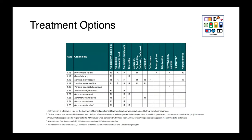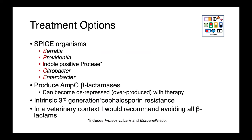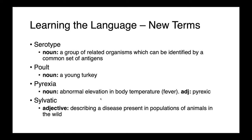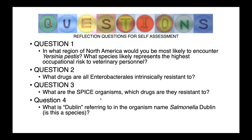The SPICE bacteria is one group worth remembering — a nice mnemonic standing for Serratia, Providencia, Indole-positive Proteae (Proteus vulgaris and Morganella), Citrobacter, and Enterobacter. These organisms are intrinsic producers of AmpC beta-lactamases, which are degradative enzymes that cannot be inhibited with beta-lactamase inhibitors — clavulanic acid will not help you and will not restore susceptibility. These organisms should be considered intrinsically resistant to third-generation cephalosporins. In a veterinary context, if you're dealing with a SPICE organism, I would recommend avoiding all beta-lactams. We have quite a few new terms today, along with a few questions for self-assessment. We'll see you next time.